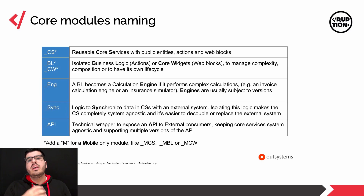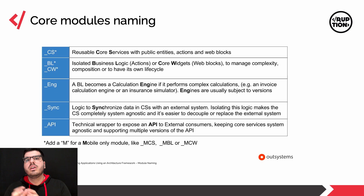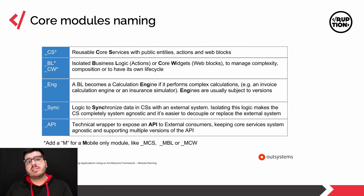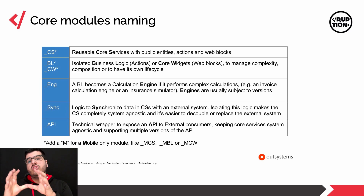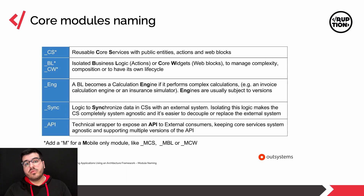Then we'll have the _ENG suffix, which is a BL that becomes a calculation engine — essentially a BL on steroids that performs complex calculations. For example, an invoice calculation engine or an insurance simulator would fit here. Engines are usually subject to versions. Then we have the _sync suffix for asynchronous processes — logic to synchronize data in the CS with an external system. We isolate this logic to keep the CS completely system agnostic, making it easier to decouple or replace external systems. This is where your processes and timers to fill or remove data from your entities will fit.